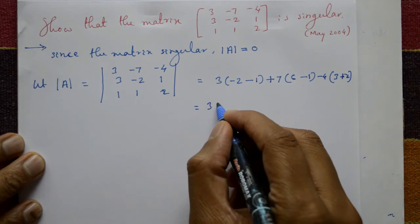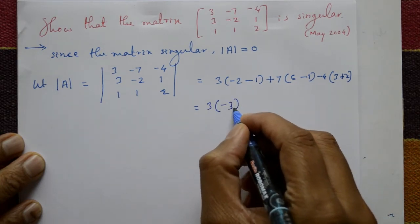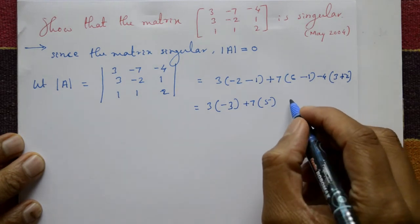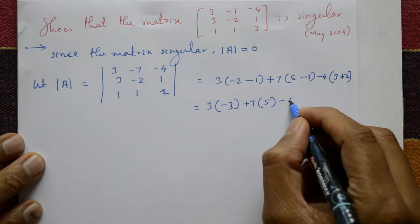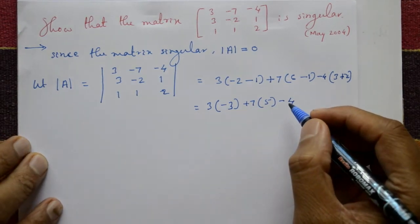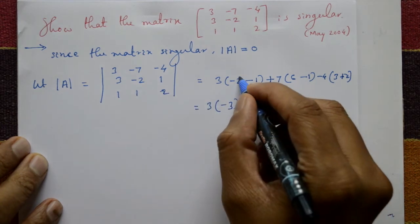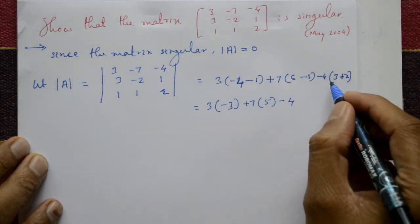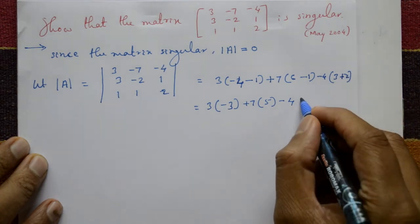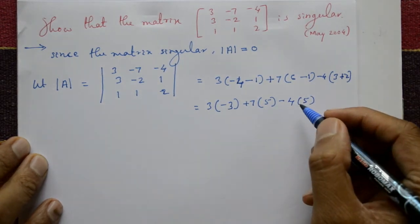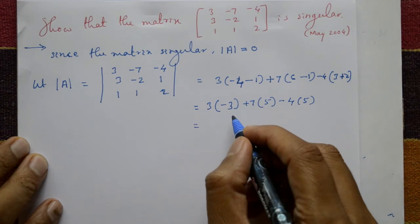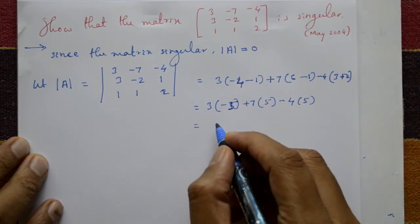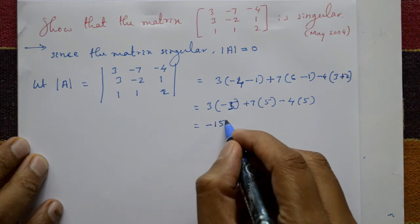So the expansion gives: 3 × (-5) plus 7 × 5 plus (-4) × 5. That is: 3 into -5 is -15, plus 7 into 5 is 35, and -4 into 5 is -20.